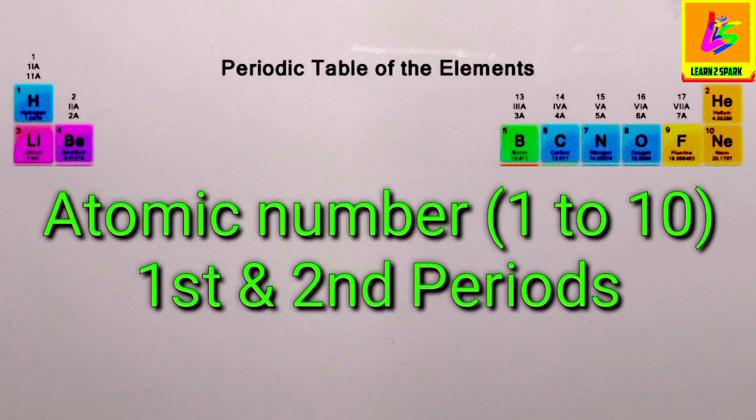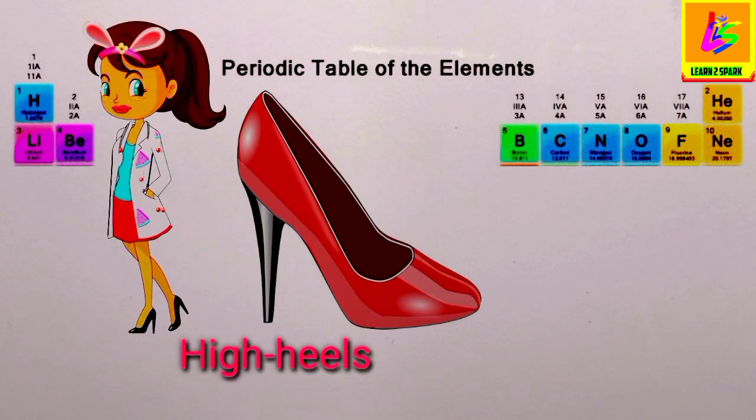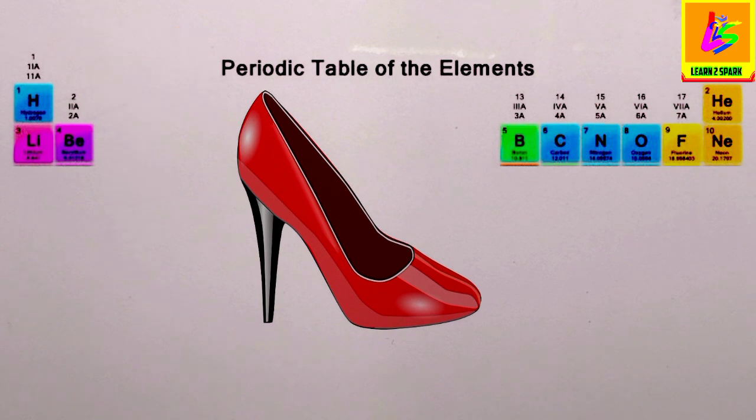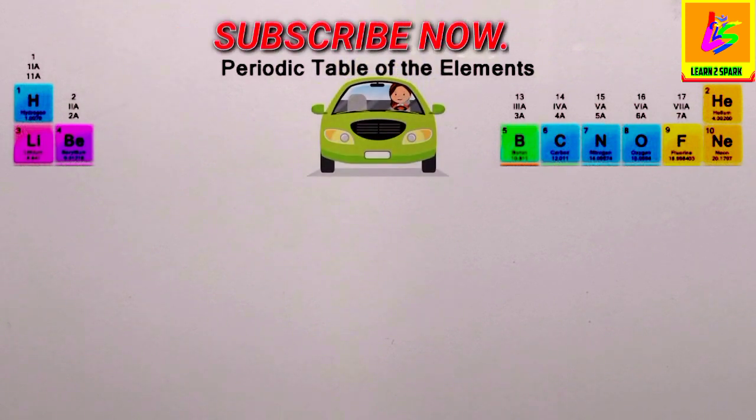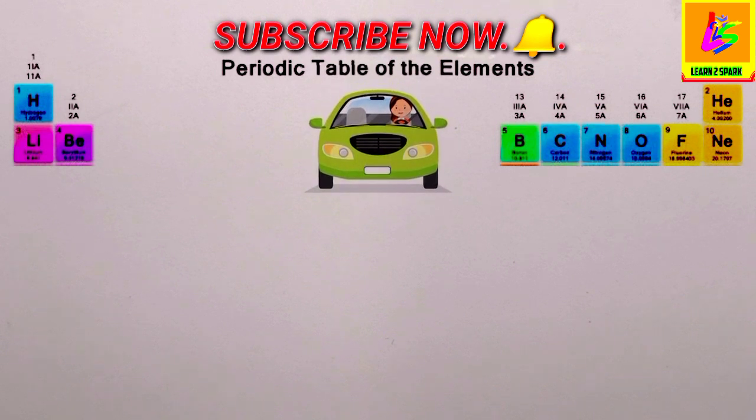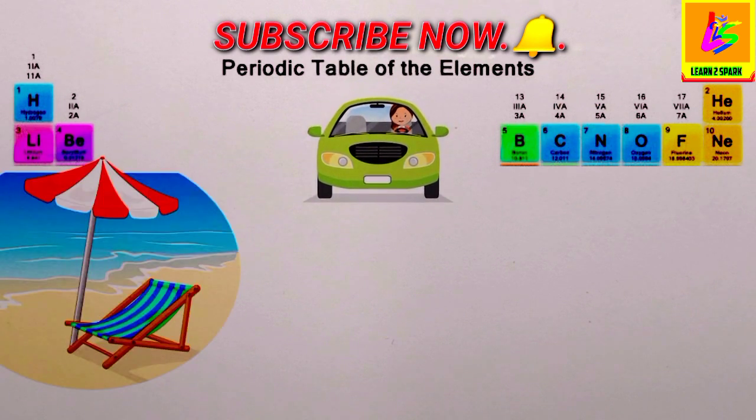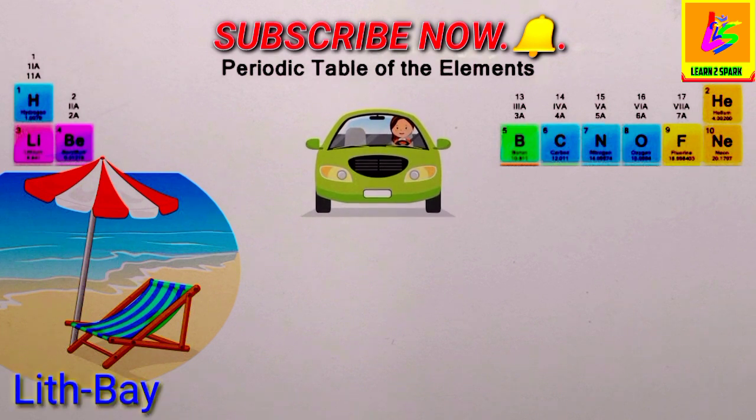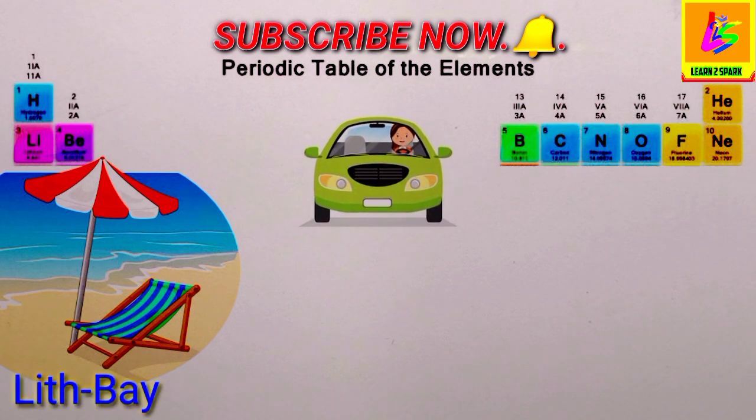Let's start with the first and second period from atomic number 1 to 10. Let's get into a situation where a girl wearing high heels wanted to visit a beach. She started her journey in the car. It was a pandemic situation, so there were some restrictions. But somehow she reached the beach called Lit Bay.